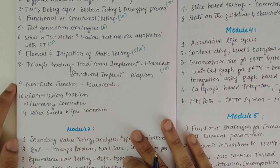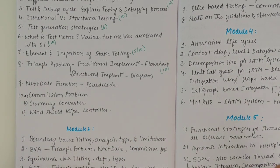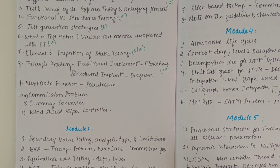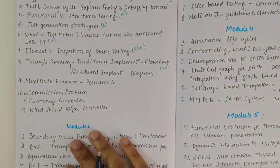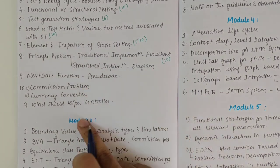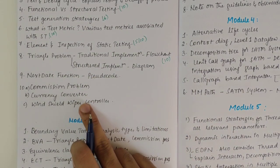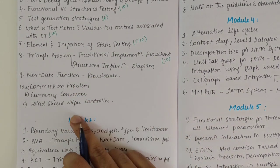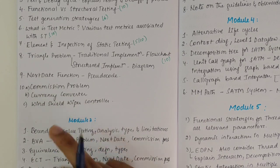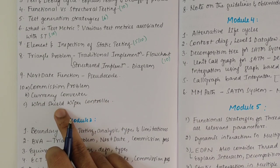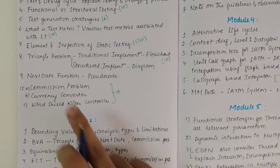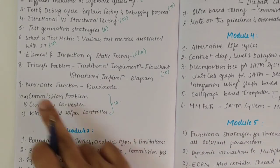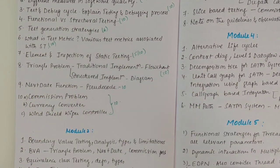Next we have the next date function. For the next date function, only the pseudo code has to be written. This is again a must question. Coming to these three — commission problem, currency converter, and windshield wiper controller — one among these three would be asked for 10 marks, or two could be asked. Next date function, if asked, will be for 10 marks only.